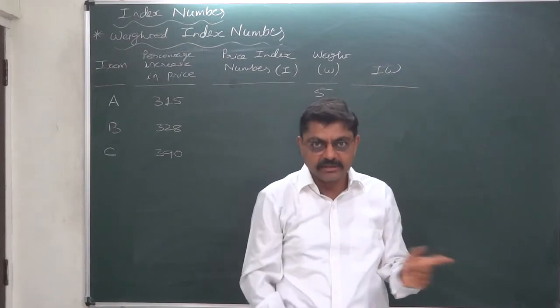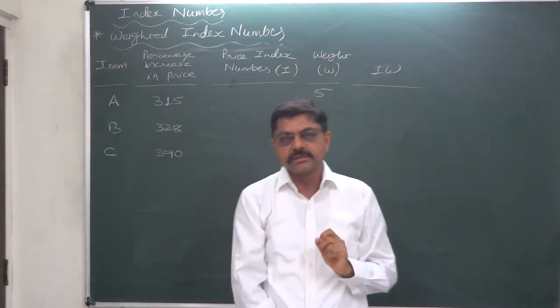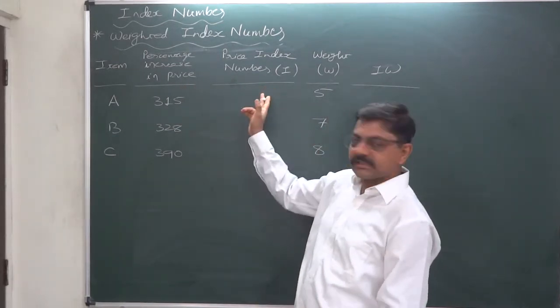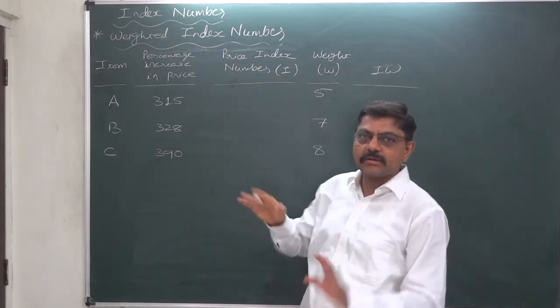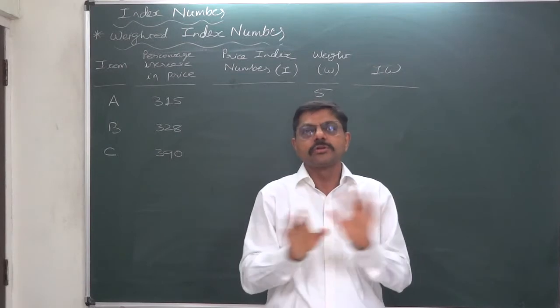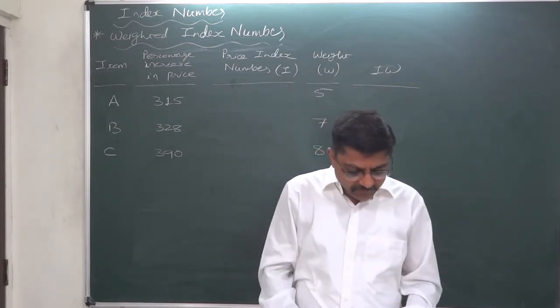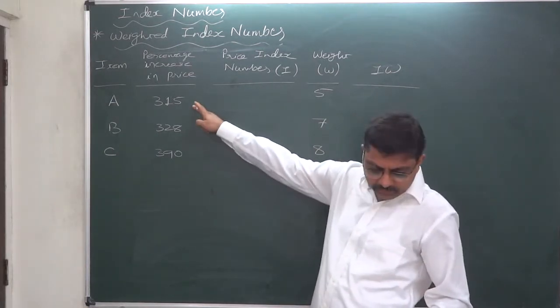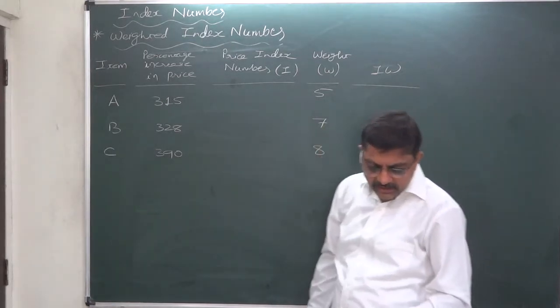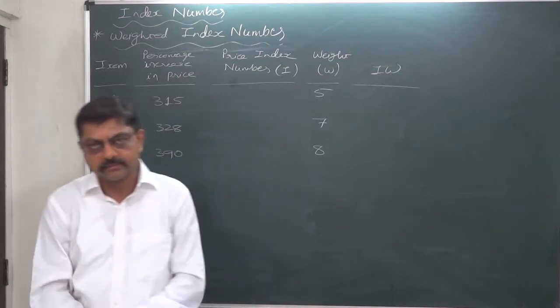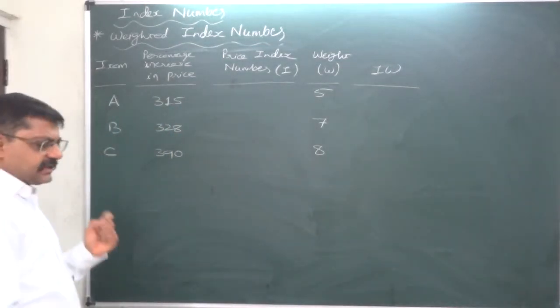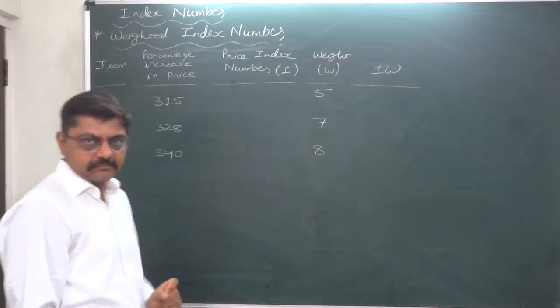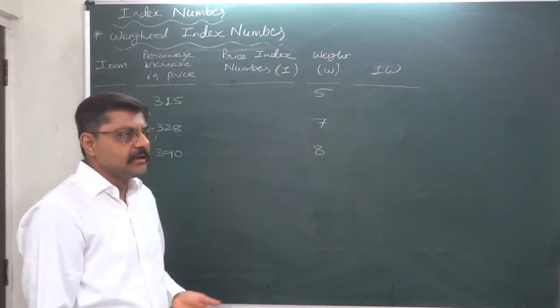This is the interpretation. Many of the students ignored the word 'increase' and they took all these as price index numbers and multiplied them by weights and got the general price index, but the whole solution was wrong. Yes. If the importance of these three commodities or items or things are in the ratio of 5 is to 7 is to 8, then construct the general price index number. Yes, so it is a tricky question. Just your presence of mind is needed to solve it correctly.